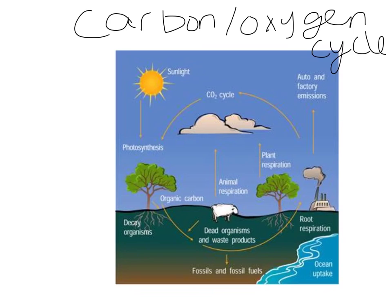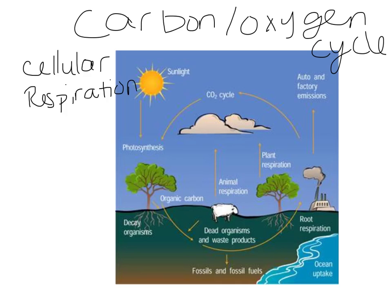Things that release carbon include cellular respiration. Hopefully we remember what cellular respiration is — it's the formation of ATP, that usable energy. It requires glucose and oxygen, it releases carbon, it releases water. Organisms do cellular respiration: plants do cellular respiration, animals do cellular respiration. So that releases carbon back into the atmosphere.